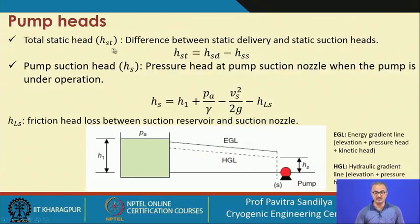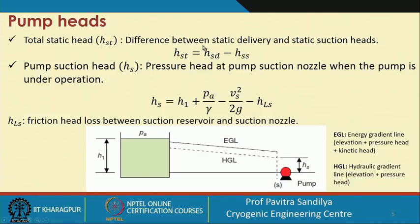The total static head is given by the difference between the static delivery head and the static suction head. This is how we find the total static head — the head the pump has to push against.